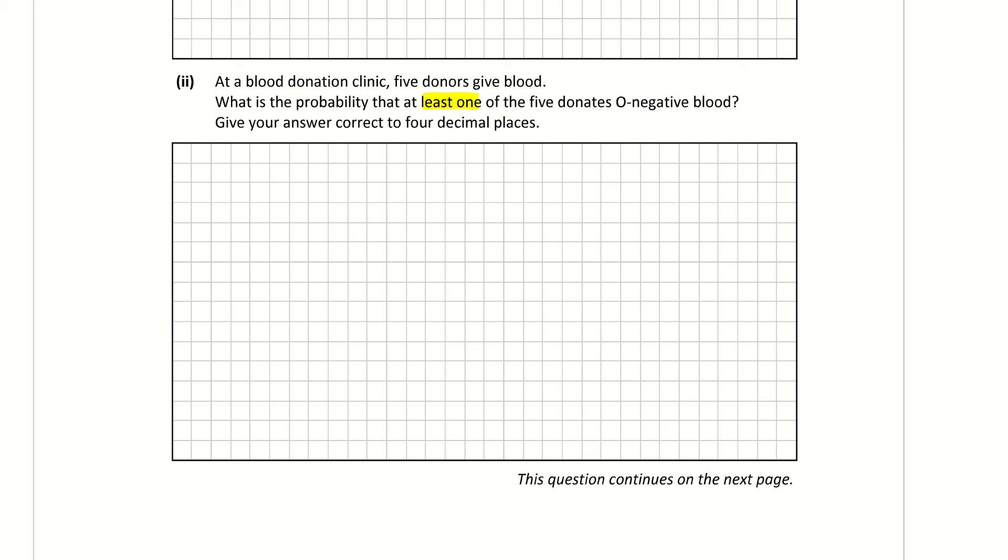But it could be easier if we just look at the at least one part. And the key for that is that if we find the probability of none of them being O negative and subtract that then from 1, that will give us the probability of at least one of them being O negative. So we're doing the opposite basically.